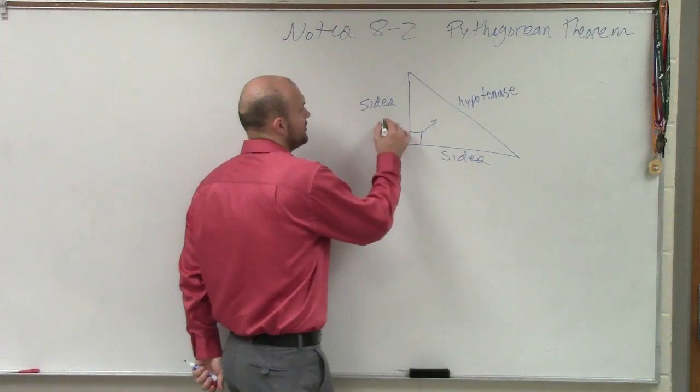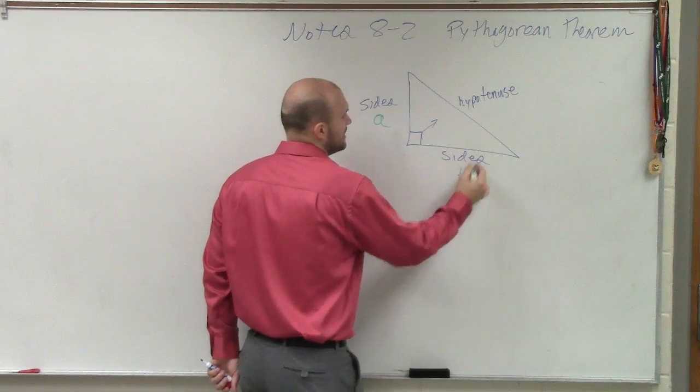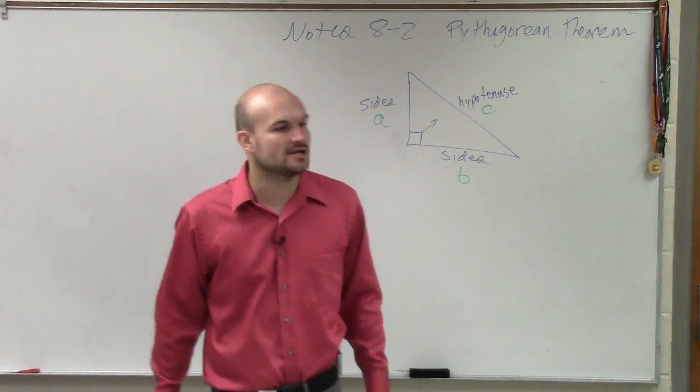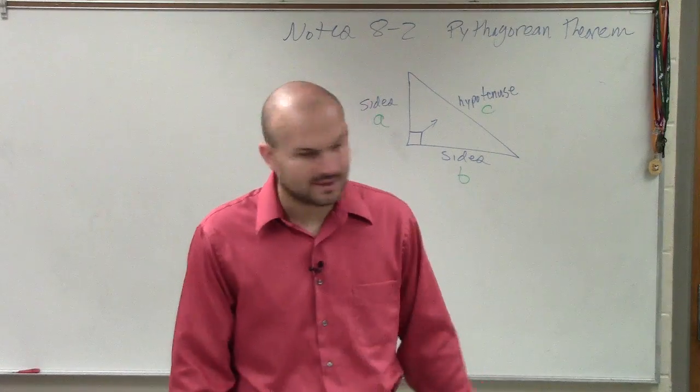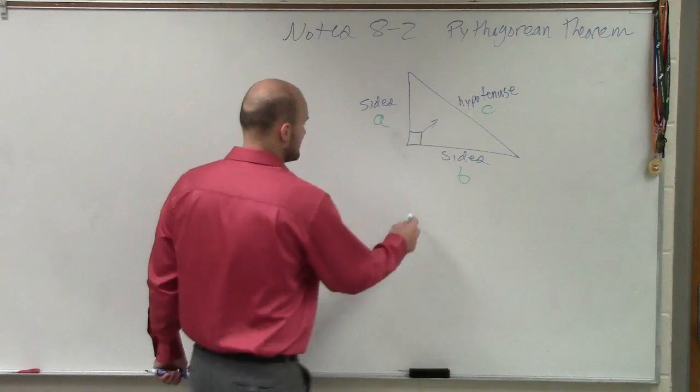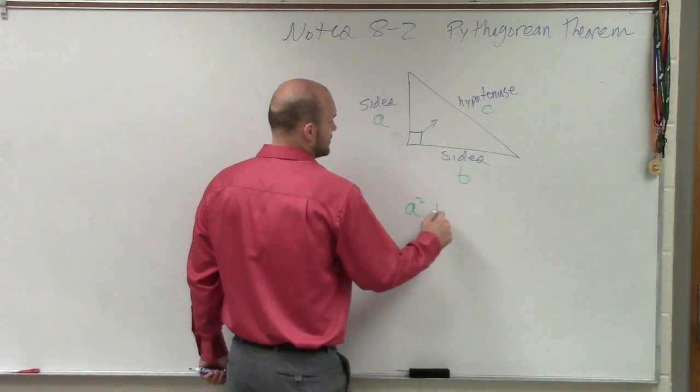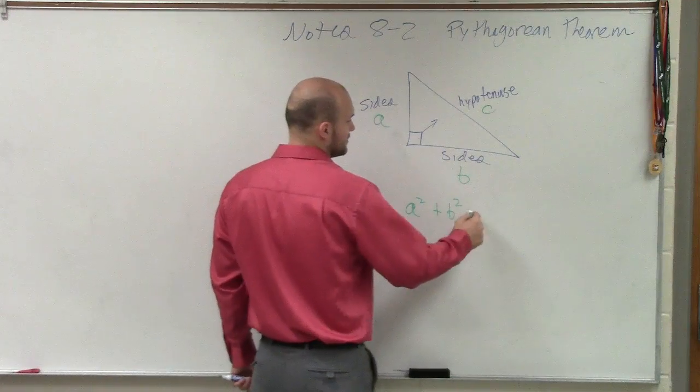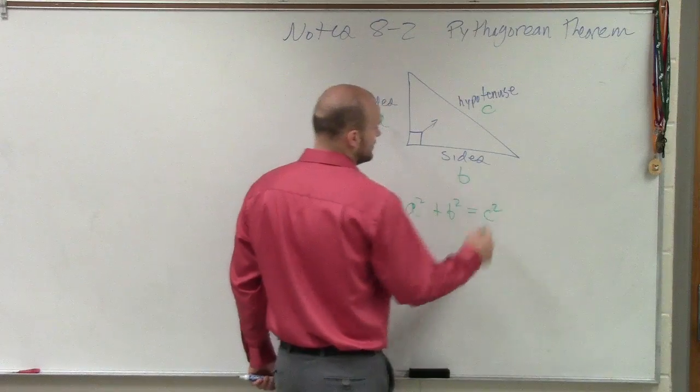So let's just call this A, B, and C. Let's give our sides, all these sides of a triangle, a name. So what it states is, A squared plus B squared is equal to C squared.